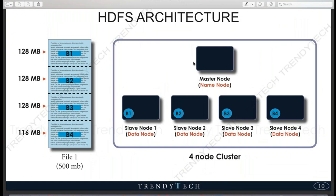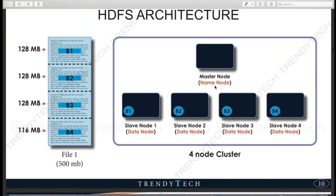The master node is called the NameNode, and all the slave nodes are called DataNodes. The master is the NameNode, which stores the metadata about what is kept where. All the nodes where actual data is stored are called DataNodes. DataNodes hold the actual data in the form of blocks, and the NameNode holds the namespace information — the metadata.